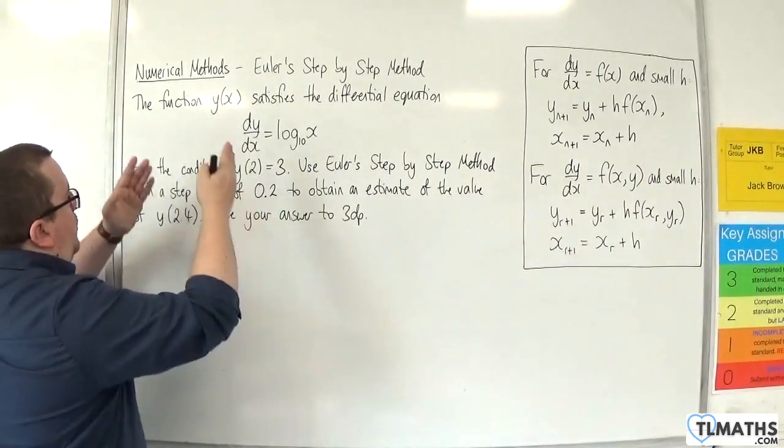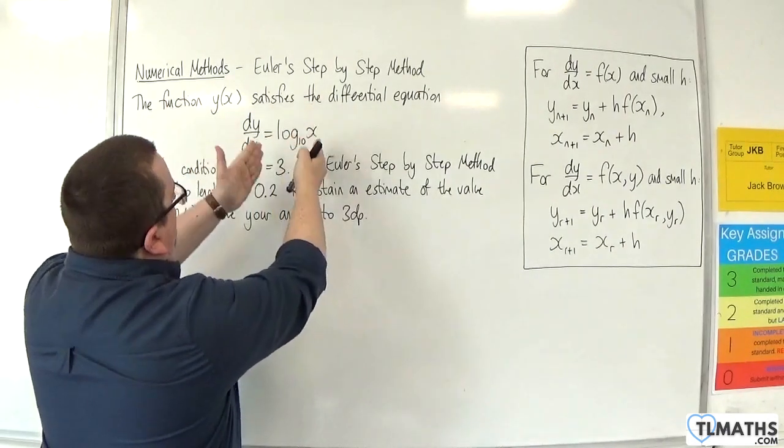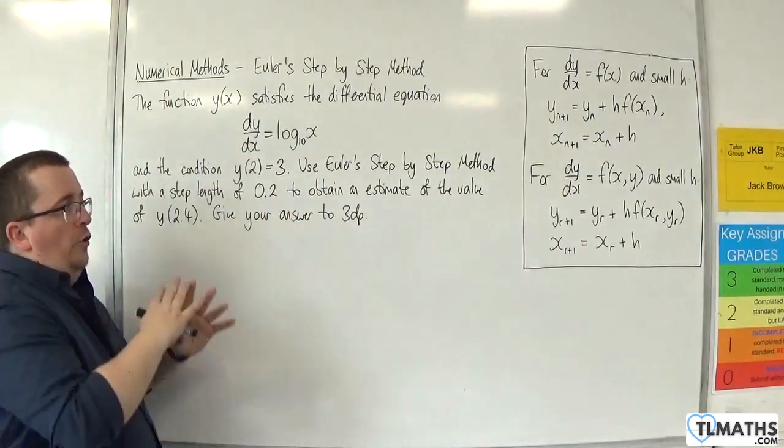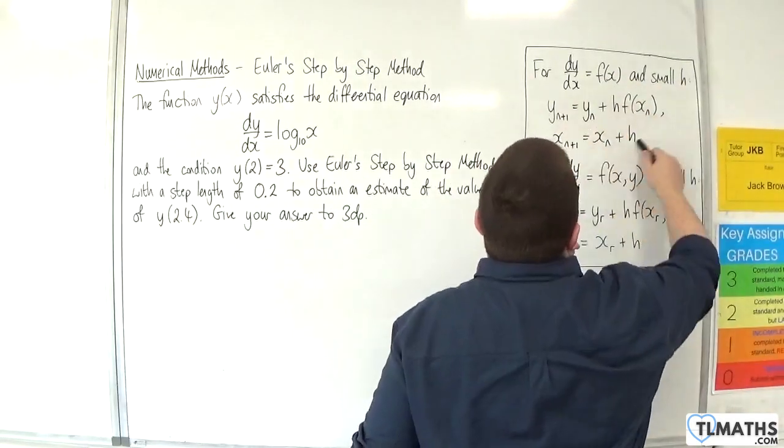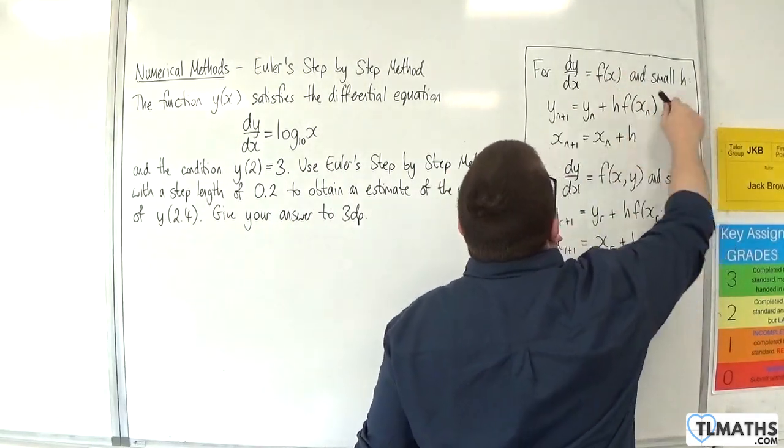Now the first thing is that we have dy by dx is equal to some function of x, not some function of x and y. So we're just looking at the top half here. That's what we're going to be working with.